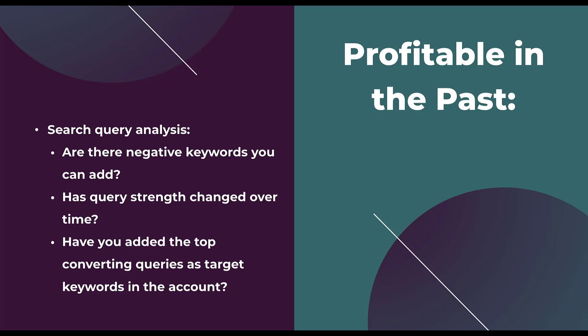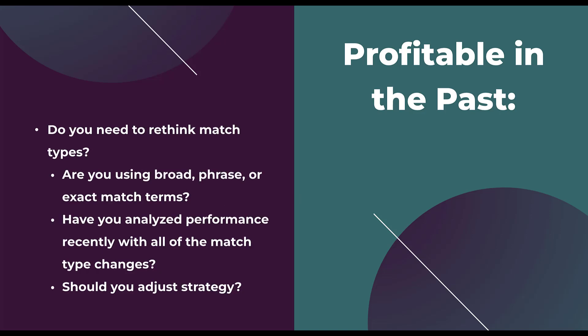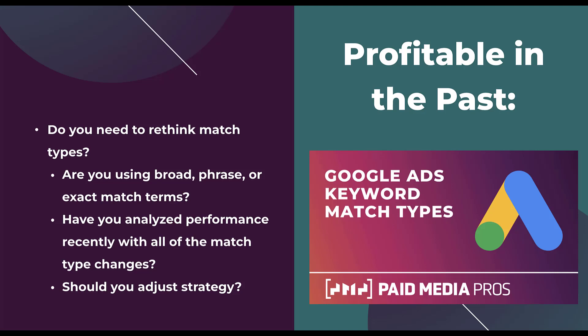In the same vein of trying to focus on query relevancy, I also want to talk about keyword match types. These have changed quite a bit over the past few years, and depending on how long your account has been running, maybe you need to revisit your keyword match type strategy. Are you using all broad, phrase, and exact match terms, or just a couple? Have you analyzed performance recently with all of those changes to see how each one is performing? We do have a video that covers Google Ads keyword match types, so go give that a watch and see if match types need to be adjusted to improve the performance and query relevancy of your keyword.